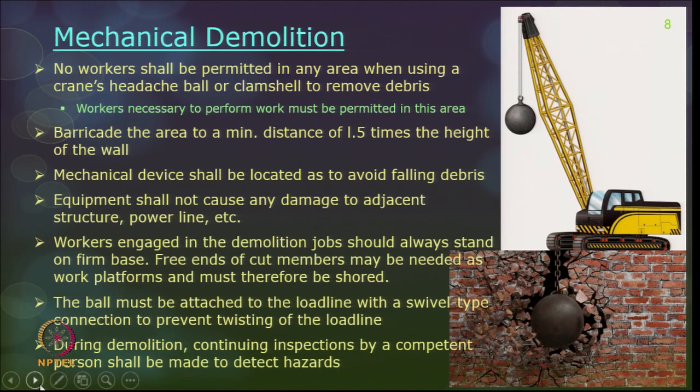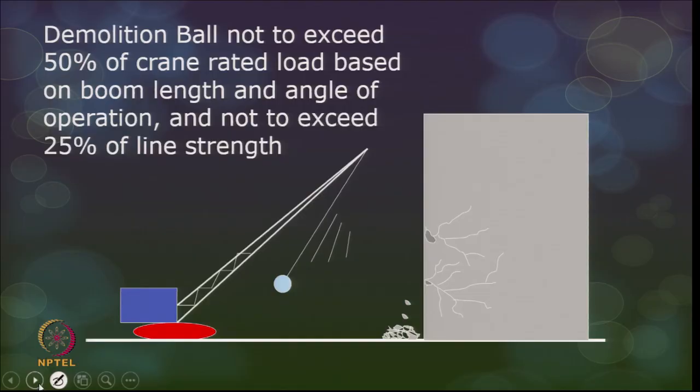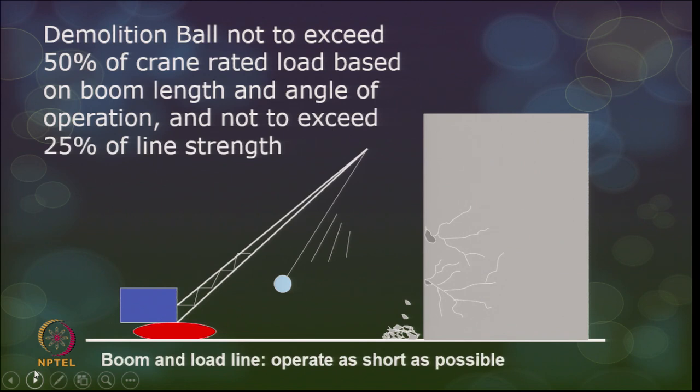The ball must be attached to the load line with a swivel-type connection only, so that it does not twist during action. During demolition, continuous inspections by a competent person should be made on the structure to verify the stability of weakened portions. The demolition ball should not exceed 50% of the crane's rated load based on boom length and angle of operation, and should not exceed 25% of the line strength. The boom and load line should operate as close as possible, and falling debris must not affect the crane or equipment.